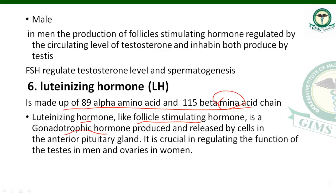In the previous lecture, I found that what is gonadotrophic hormone — it will regulate the gonads. And it is produced and released by cells in the anterior pituitary. Same here, luteinizing hormone is also produced by the anterior pituitary.